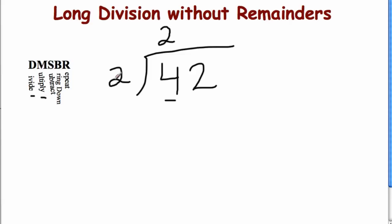Multiply. Two times two is four. So write four right underneath the four. You know to set up your subtraction problem because subtraction is your next step here. Four minus four. You got it. Zero.